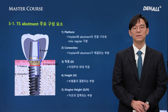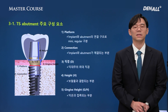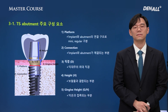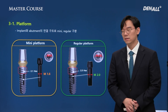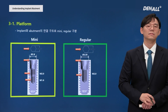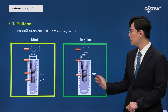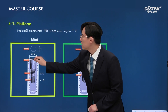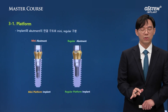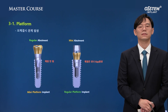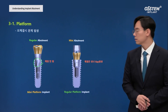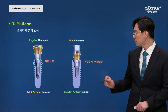I am going to talk about the specifications of TS abutment. There are different specifications to consider: platform connection diameter, height, and gingival height. The platform can be divided into two. In TS, under 3.5 is considered mini-platform and over 4.0 is regular platform. The platform size differs, so abutments are not interchangeable. Mini-platform is 2.8 mm and regular platform is 3.35 mm. You need to use mini-abutment for mini-platform and regular abutment for regular platform. If you use a regular abutment on mini-platform it will not connect, and if you connect a mini-abutment on regular platform there will be a gap.